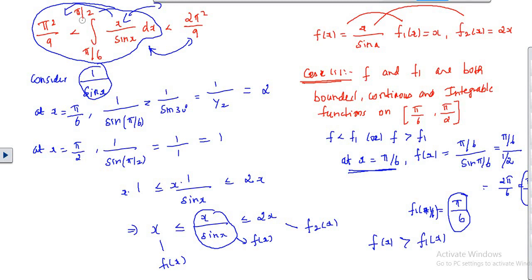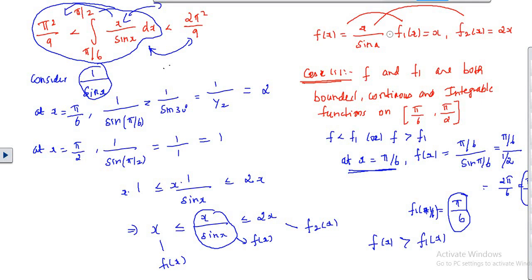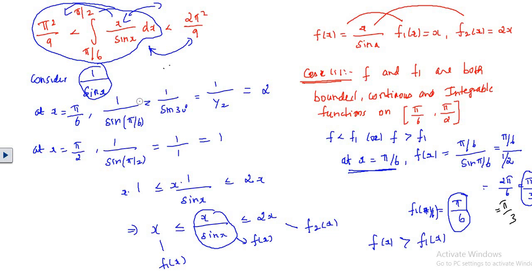I'll find the value of 1/sin(x) at x = π/6 and at x = π/2. At x = π/6, I get 1/sin(π/6) = 1/(1/2) = 2. At x = π/2, I get 1/sin(π/2) = 1/1 = 1. So we can see that 1/sin(x) ranges from 1 to 2 on this interval.